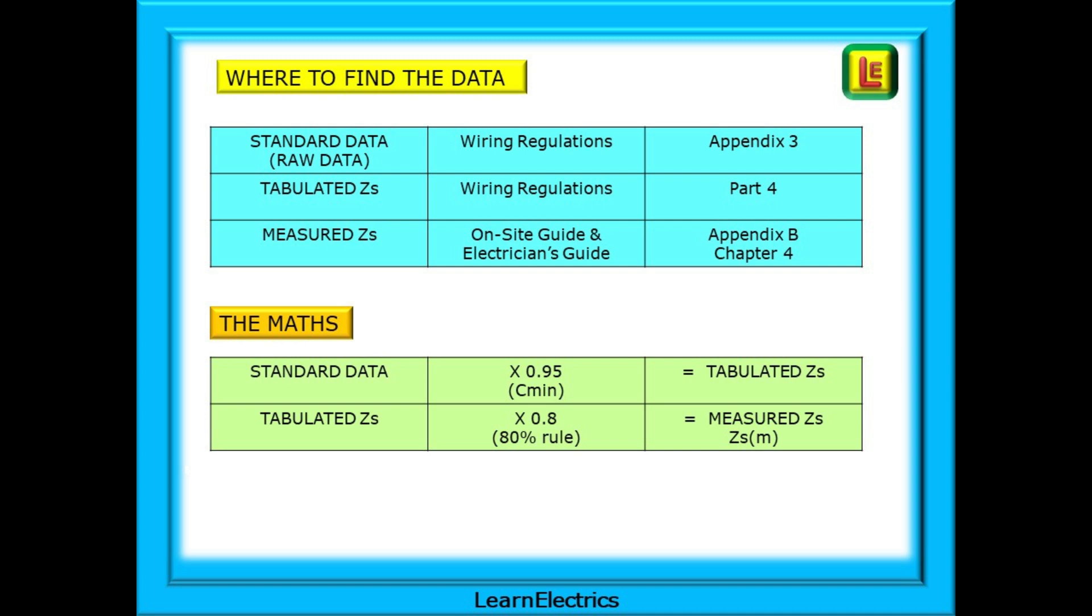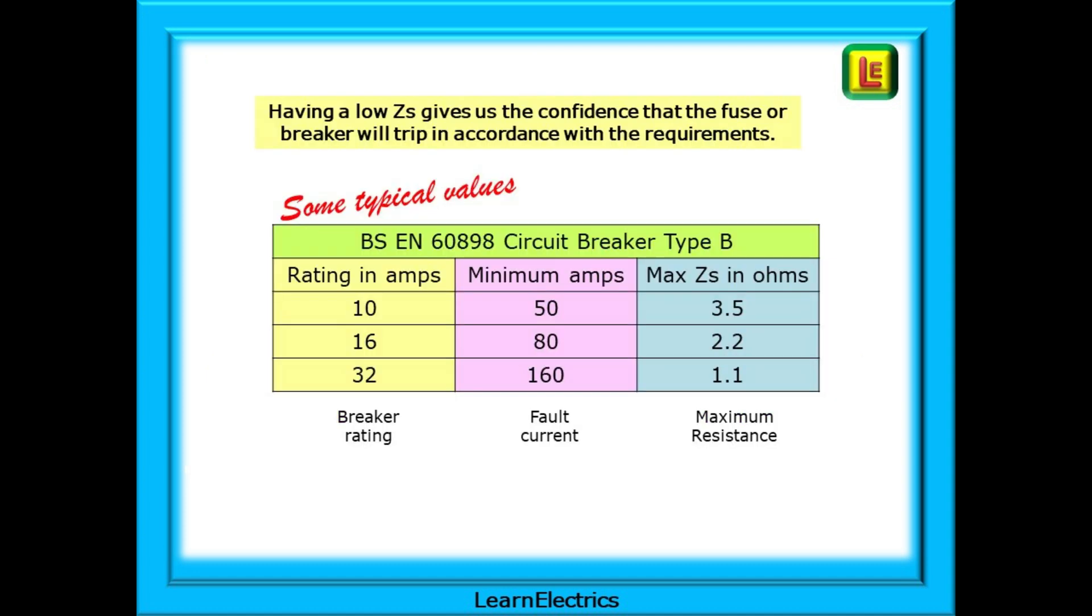Sometimes, but not always, watch out for that one. Having a low measured ZS gives us the confidence that the fuse or breaker will trip in accordance with requirements. The lower the actual ZS, the better. Lower resistances help guarantee that a high fault current will flow.